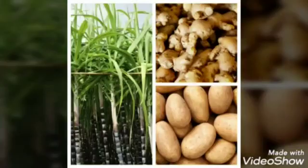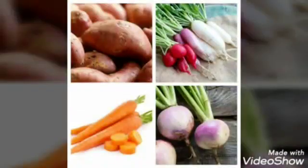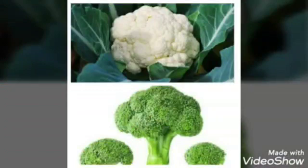We eat stems of some plants like potato, ginger and sugar cane. They grow under the ground; however, they are stems, not roots. We eat roots of some plants like sweet potato, radish, carrot, turnip etc. We eat flowers of some plants like cauliflower and broccoli.